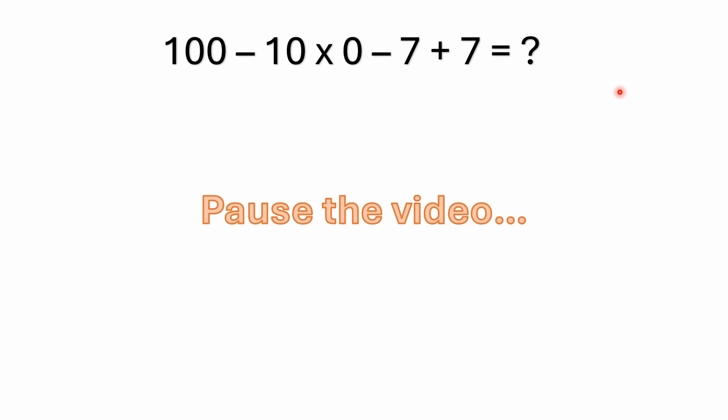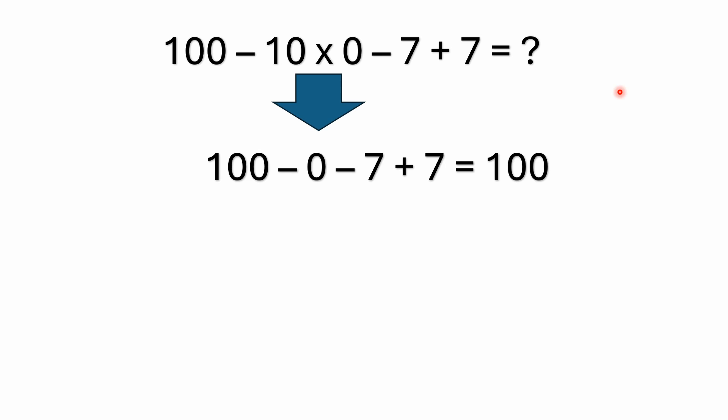All right, so if you remember your order of operations, multiplication has precedence over addition and subtraction. So the first operation performed here is the multiplication, which is 10 times 0, and 10 times 0 is 0. So we're just left with 100 minus 0 minus 7 plus 7, then that equals 100.